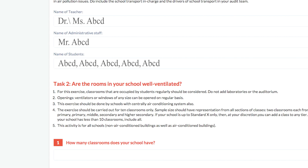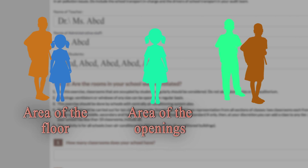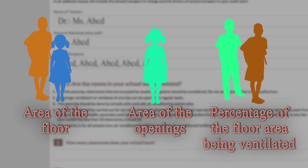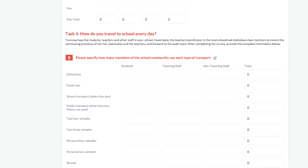For this task, the team can divide itself into subgroups to find the details of the classrooms. One team can find the area of the floor. Another team can find out the area of the openings. A third team can calculate the percentage of floor area being ventilated. A team of students can find out the total number of classrooms the school has and fill the data accordingly. Remember, as and when you find information, you can populate the section.